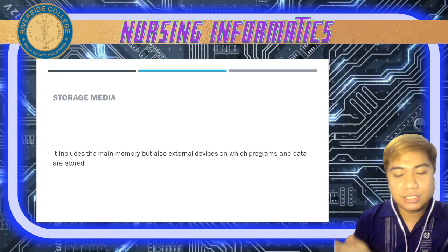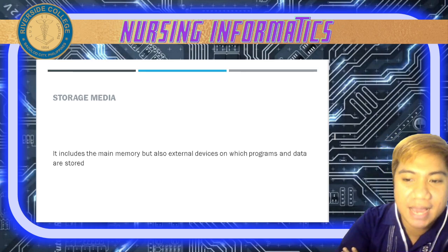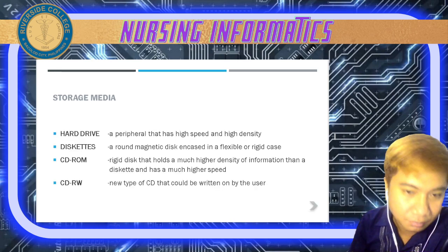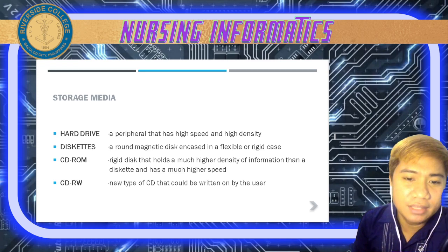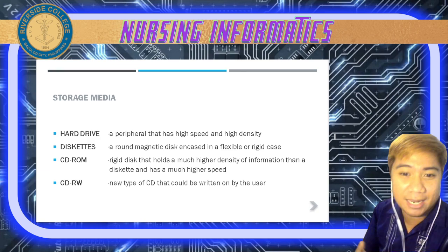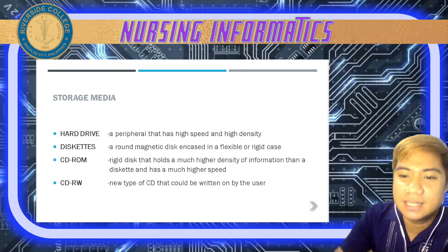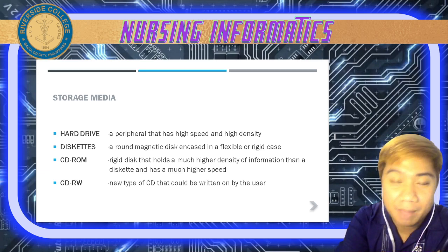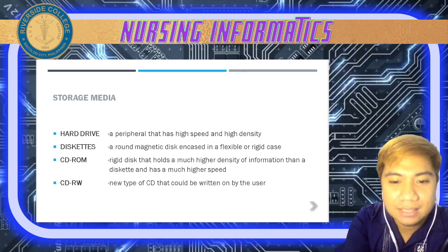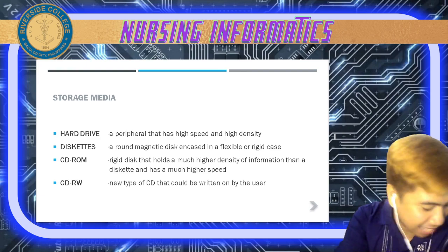Next is your storage media — it includes the main memory but also external devices on which programs and data are stored. We have different types of storage media. Number one is the hard drive, which is a high-speed and high-density peripheral that you connect to the computer.